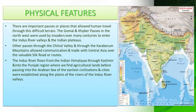The Indus River flows from the Indian Himalayas through Kashmir and into the Punjab region, where we find agricultural land, before passing into the Arabian Sea. The earliest civilizations and cities were established along the plains of the Indus River valleys. All civilizations have flourished on river banks, and the Indus Valley civilization is one of the oldest. People came to live in this region because of fertile agricultural land and the easy availability of river water for various purposes.